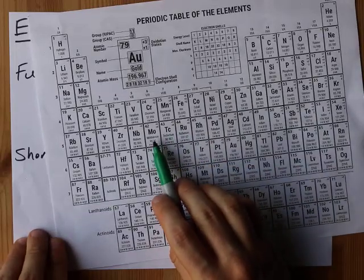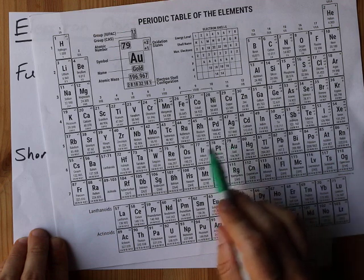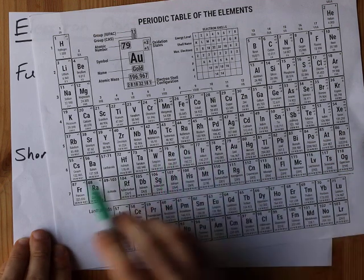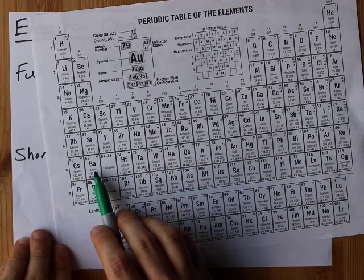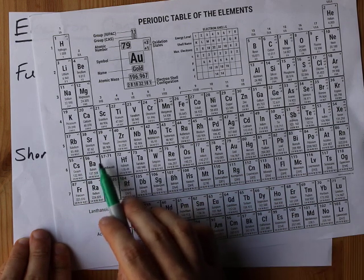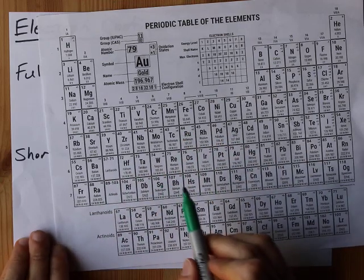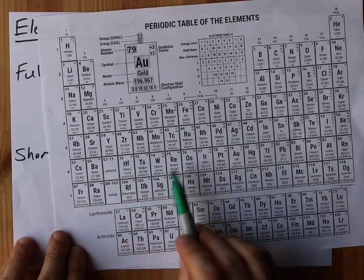Now molybdenum is going to do this as well. 5s1 4d5. Tungsten will do this. 6s1, you're still going to have your 4f14 if you get that far in the periodic table, and your 5d5.